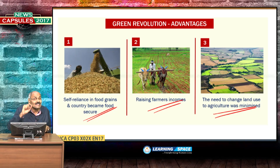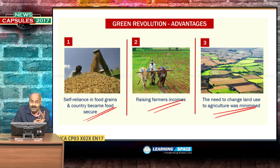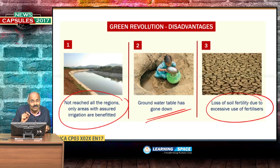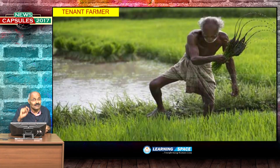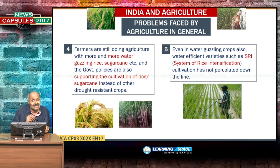The green revolution has not touched all areas. The immediate need of the hour is a second green revolution to benefit rain-fed crops, dry land crops, and pulses. Tenant farmers are worst affected because they do not have access to institutional credit from banks.